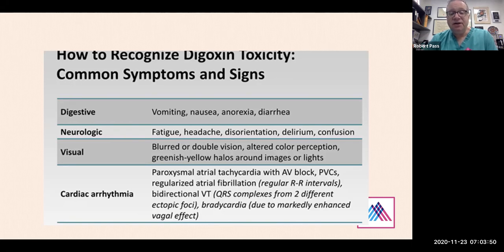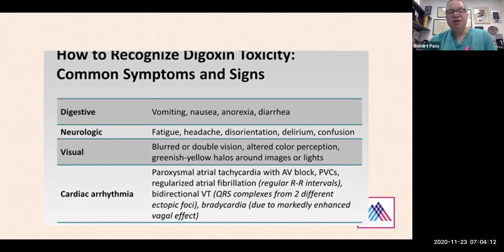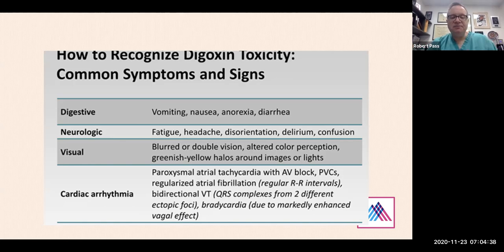Lots of different tachycardias are possible, but the most important is heart block. As you saw in that tracing, there was a first-degree heart block, thought to be due to enhanced vagal effects of digoxin. In the era before unit dosing and computerized systems with hard stops, a very common error was a patient getting 10 times the dose of digoxin due to dosing in micrograms versus milligrams. That happened roughly once a year in every hospital for my first 10 years. If someone goes into renal failure, they can also develop digoxin toxicity.